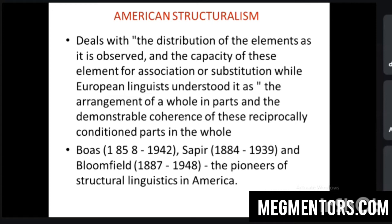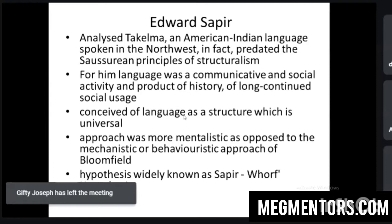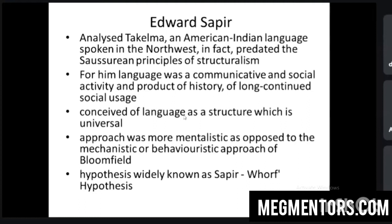We start with Edward Sapir. He began his studies in Takelma, which is an American Indian language. His ideas predated the Saussurean principles of structuralism. For him, language was a communicative activity — it is a product of history. He also explained language in terms of its structure and said that the structure of language is universal, which was later explained by Chomsky. He said every language has a universal structure.